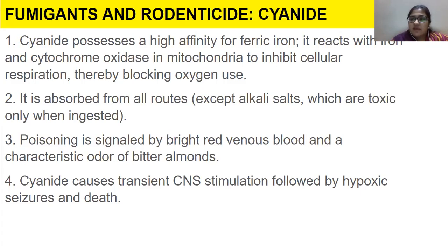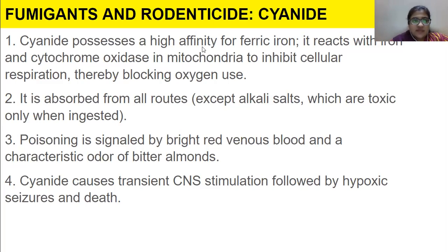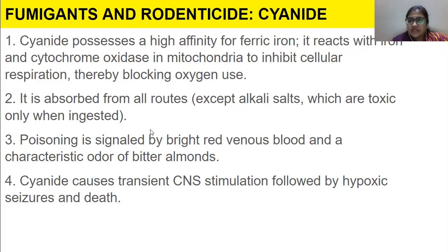Cyanide goes and binds to the ferric iron in cytochrome oxidase in the mitochondria to inhibit cellular respiration, thereby blocking oxygen use. When oxygen is not used, energy won't be produced. It is absorbed from all routes except alkali salts, which are toxic only when ingested. Poisoning is signaled by bright red venous blood and a characteristic odor of bitter almonds. Cyanide causes transient CNS stimulation followed by hypoxic seizures and death.